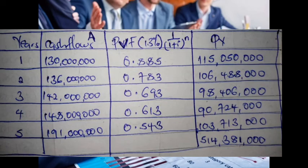For year four, the present value is 90 million 724 thousand — that is the present value of 148 million four years from now. For year five, the present value is 103 million 713 thousand — that is the present value of 191 million five years from now.